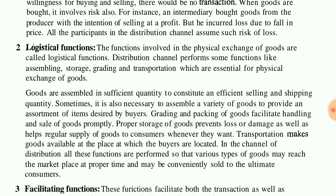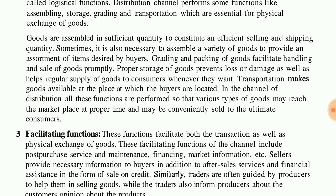What is essential for the physical exchange of goods? Goods storage, grading, and transportation from one place to another. Goods are assembled in sufficient quantity to constitute an efficient selling and shipping quantity. Sometimes it is also necessary to assemble a variety of goods to provide an assortment of items desired by the buyers, so that the buyer's desire can be fulfilled.